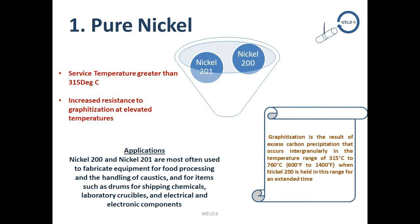In solid solution strengthened alloys, the first group is pure nickel. Nickel 200 has UNS number N02200, and its low carbon version, Nickel 201, has UNS number N02201 and is most widely used when welding is involved. Nickel 201 is preferred for applications exposed to service temperatures higher than 315°C because it provides increased resistance to graphitization at elevated temperatures. Graphitization is the result of excess carbon precipitation that occurs intergranularly in the temperature range of 315°C to 760°C when Nickel 200 is held in this range for an extended time.